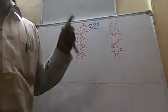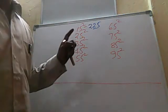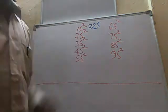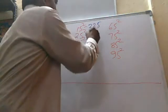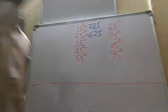Now 25². In 25, the 10th digit is 2, after that is 3. 2 into 3 is equal to 6, so 625. The last 2 digits are 25 only.